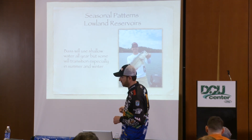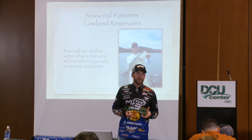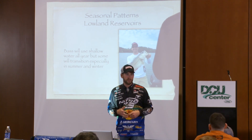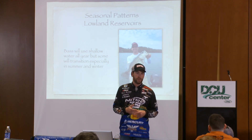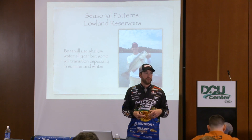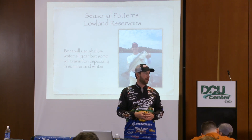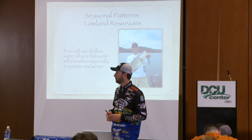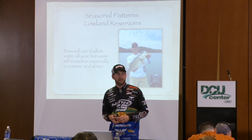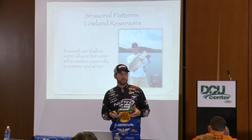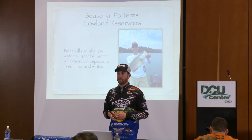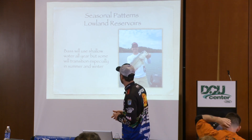Lowland reservoirs — defining those — they're a little bit more river-top lakes. The Tennessee River, most of those lakes could be considered lowland reservoirs. The Coosa River chain of lakes could be considered lowland reservoirs, or riverine reservoirs is another way to put it. Generally shallow, flatter lakes, a lot of them have grass in them. Toledo Bend, Sam Rayburn — those lakes would be lowland reservoirs. Generally flatter, but a lot of them still have pretty deep water; the general contour of the bottom is pretty much flat overall.